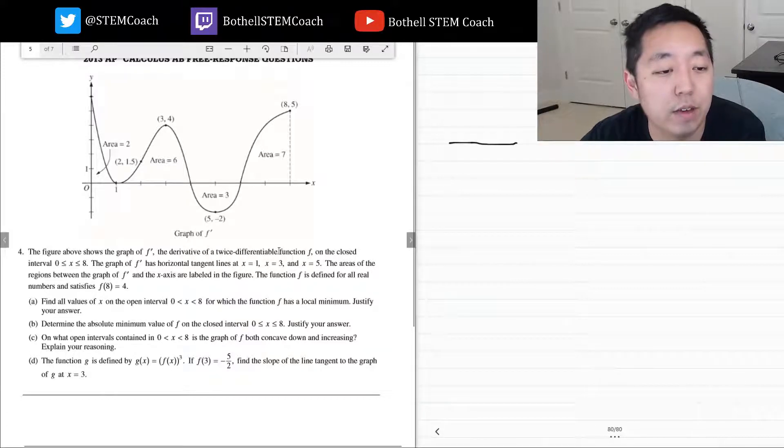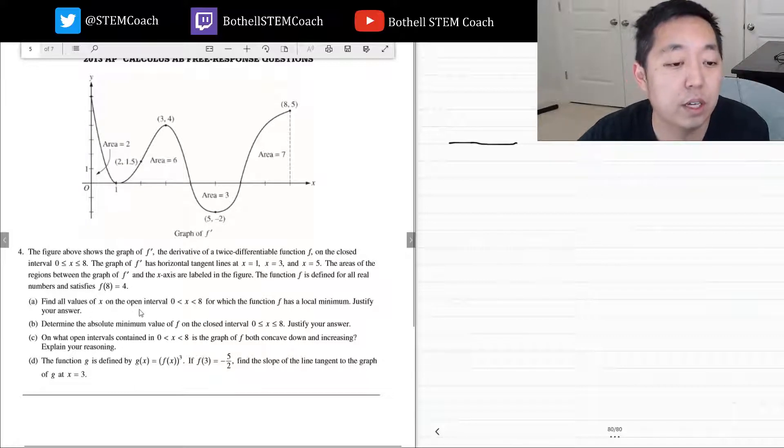The graph of f prime has horizontal tangent lines at x equals 1, 3, and 5. The areas between the regions are labeled in the figure. The function f is defined for all real numbers. Find all values of x on the open interval for which the function has a local minimum.